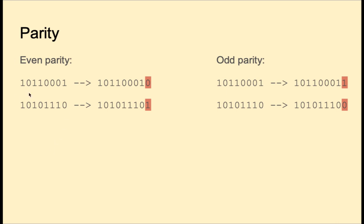Let's look at even parity. Let's say this is our byte — notice that there are four ones here. So we would set the extra parity bit to zero so that there is still an even number of ones. But if this were our byte with five ones, we would set the extra parity bit to one, making six ones — an even number.